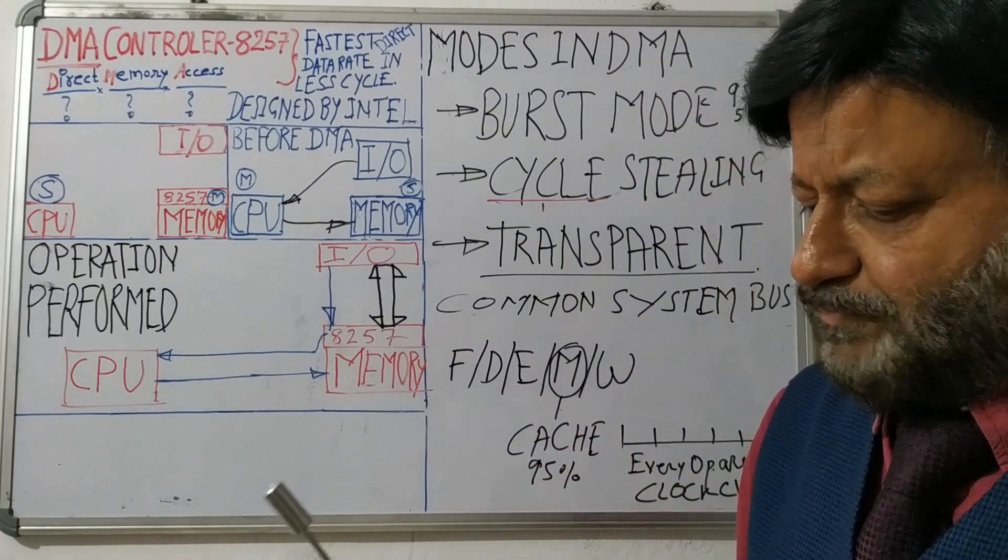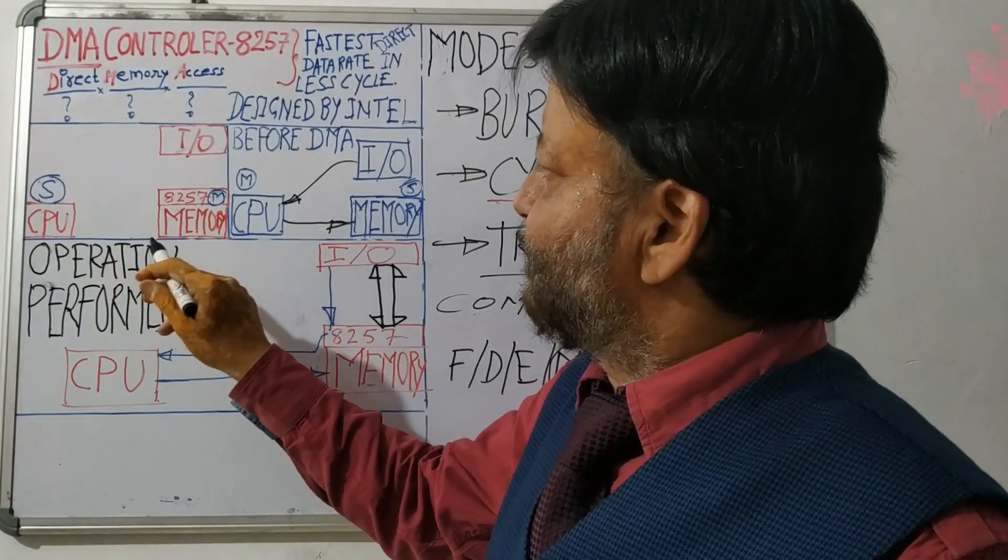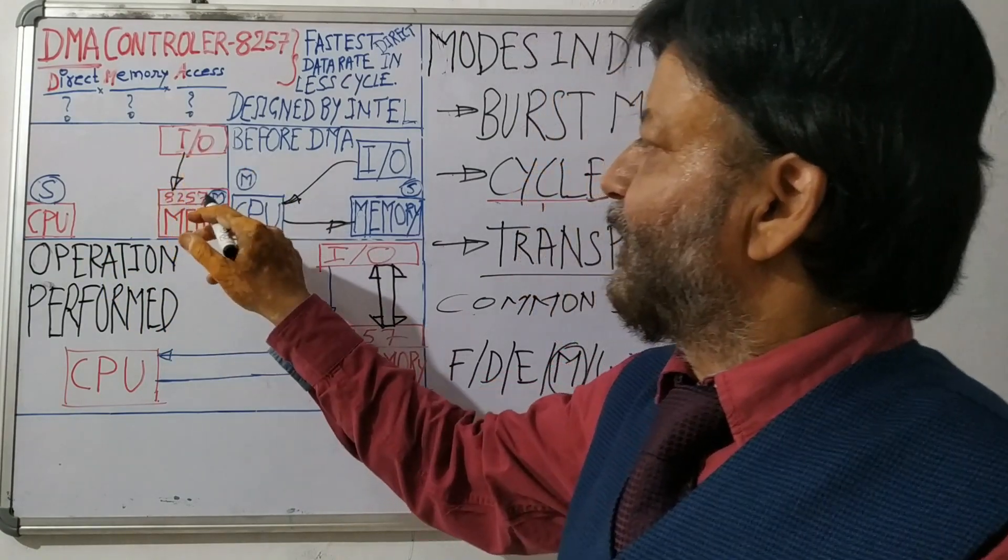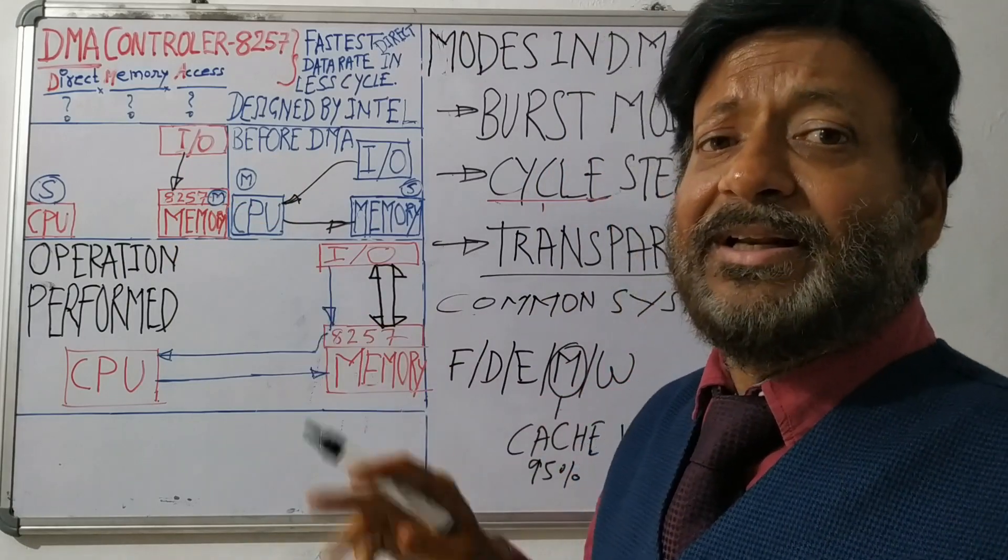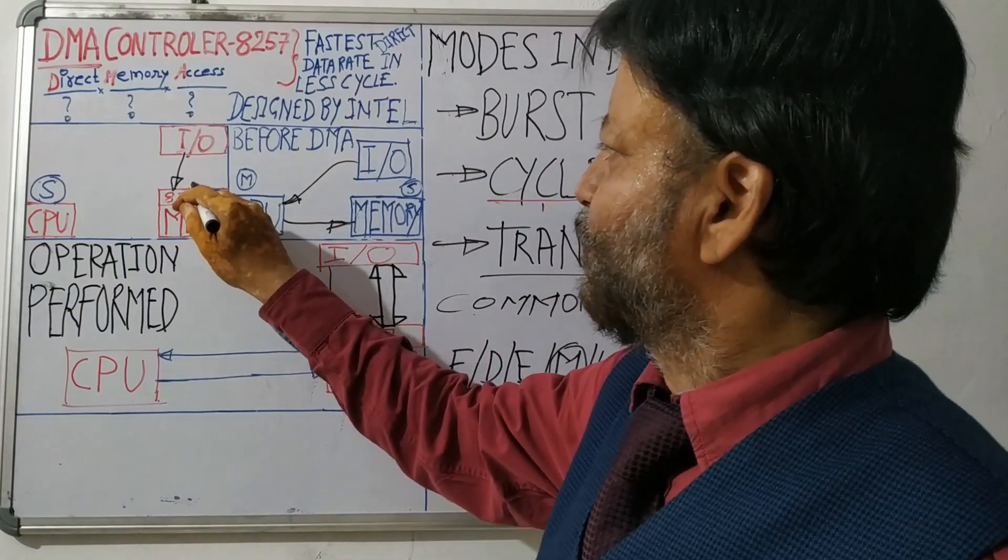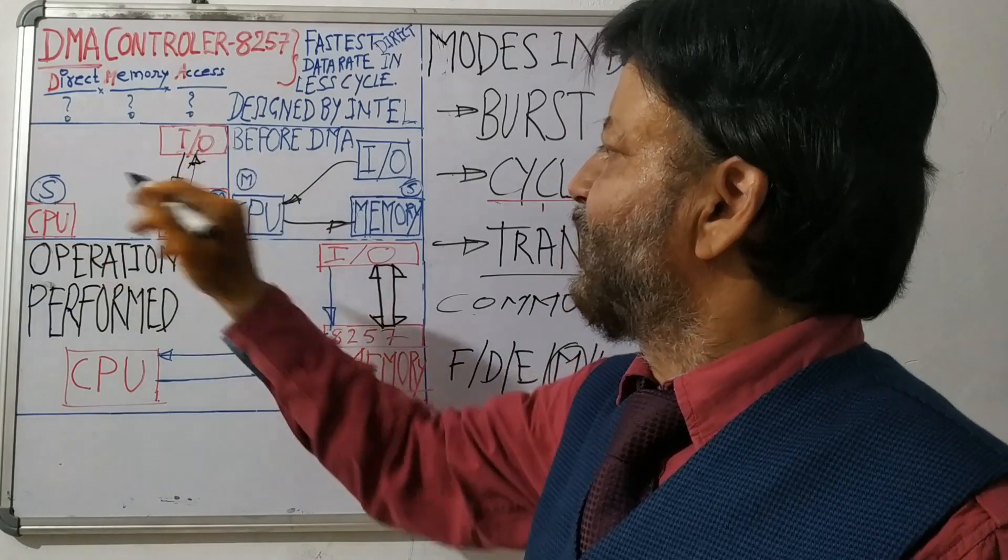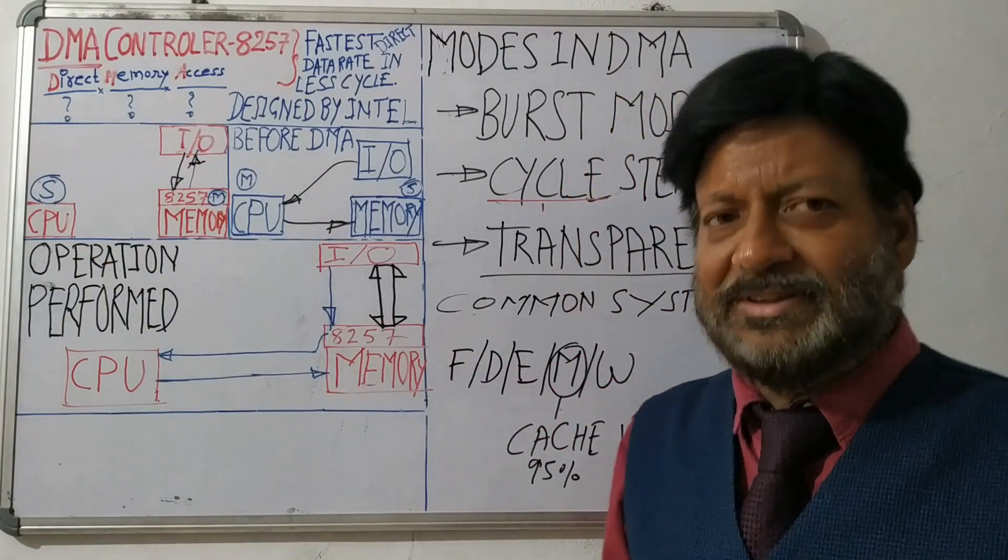So what will happen? IO can write data directly to memory. Either it can write data in memory, it can retrieve data from memory. So both things can happen without the involvement of CPU.